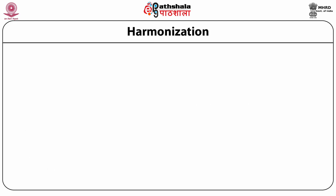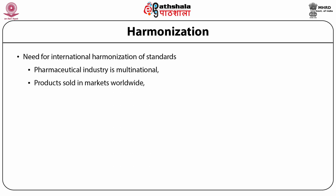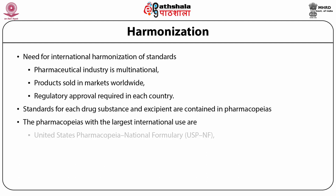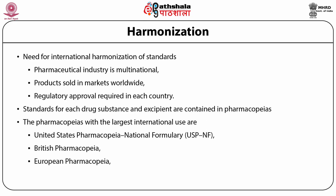The importance of harmonization of standards for raw materials is significant. The pharmaceutical industry is multinational and products are sold in markets worldwide, requiring regulatory approval in each country. If international harmonization of standards is established, it will become easier to manufacture and market products according to specifications existing in every country. Standards for each drug substance and excipient are contained in pharmacopoeias. The pharmacopoeias with the largest international use are the United States Pharmacopoeia and National Formulary (USP-NF), British Pharmacopoeia, European Pharmacopoeia, and Japanese Pharmacopoeia.